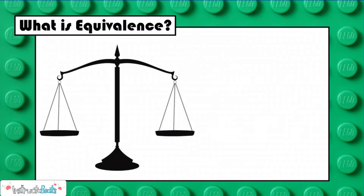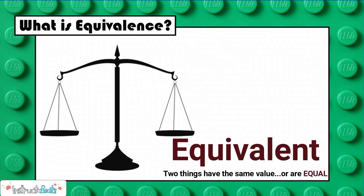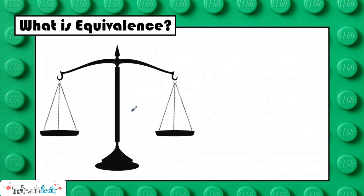So what is equivalent? Being equivalent means that two things have the same value or are equal. So when I think about equivalence, I think about this scale right here. Some people call it a balance. And we know that whatever is on this left side has to be equivalent or equal to the value of whatever is on this right side.